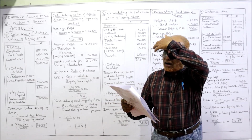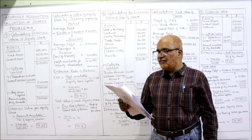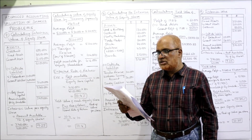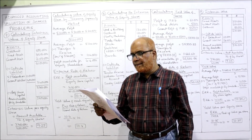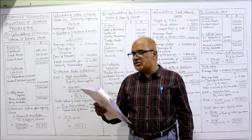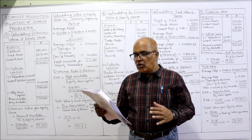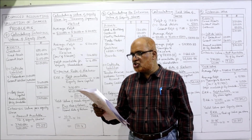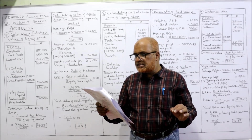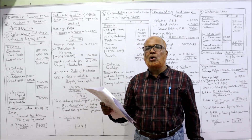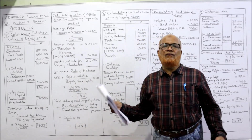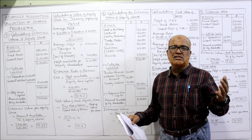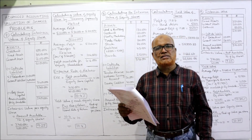The profits of the company are: 1986 — 50,000; 1987 — 70,000; 1988 — 60,000. Profits are fluctuating so we take the simple average. It is the practice of the company to transfer 20% of profit to reserve. Ignoring taxation, find out the value of the share on an intrinsic basis as also on the yield basis.